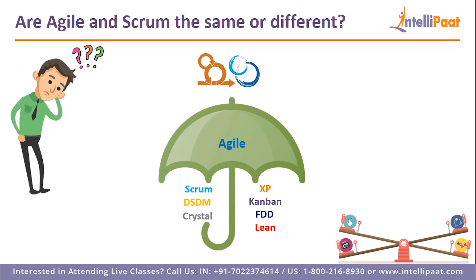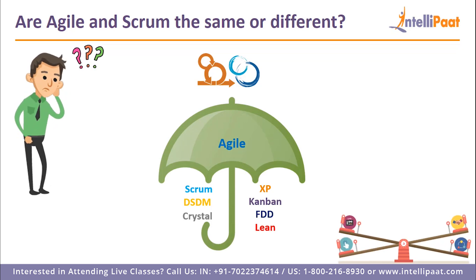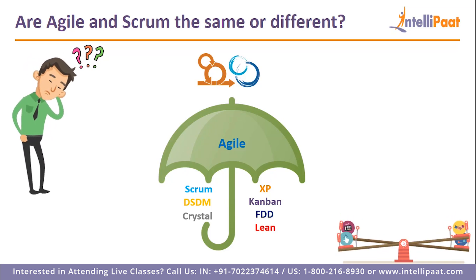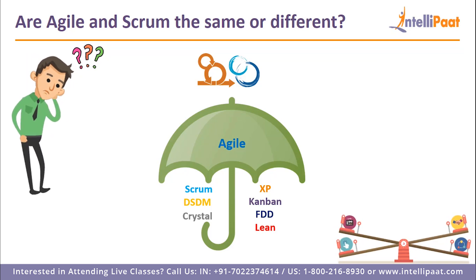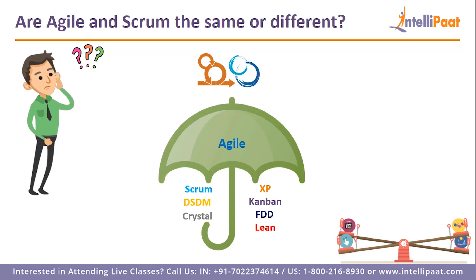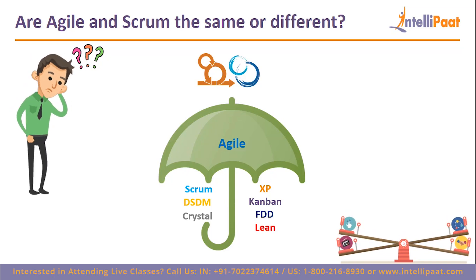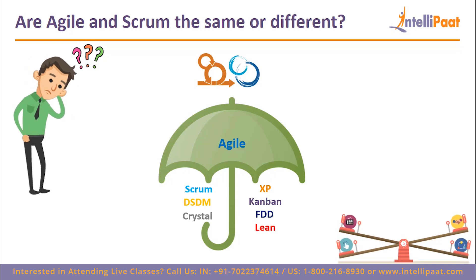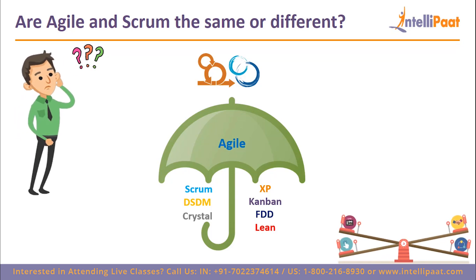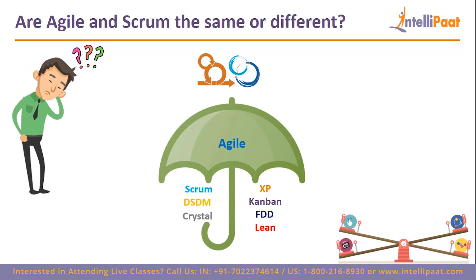Most beginners who are not aware of these terms often get confused and assume that these two are different strategies, or they look for which one is better — Scrum or Agile — or people use Scrum directly in terms of Agile. Hence, a lot of misconceptions exist. Let me tell you that Agile is a methodology or a philosophy — a broad way of thinking that helps organizations and teams to innovate, reduce risk, and respond to changing requirements or demands.